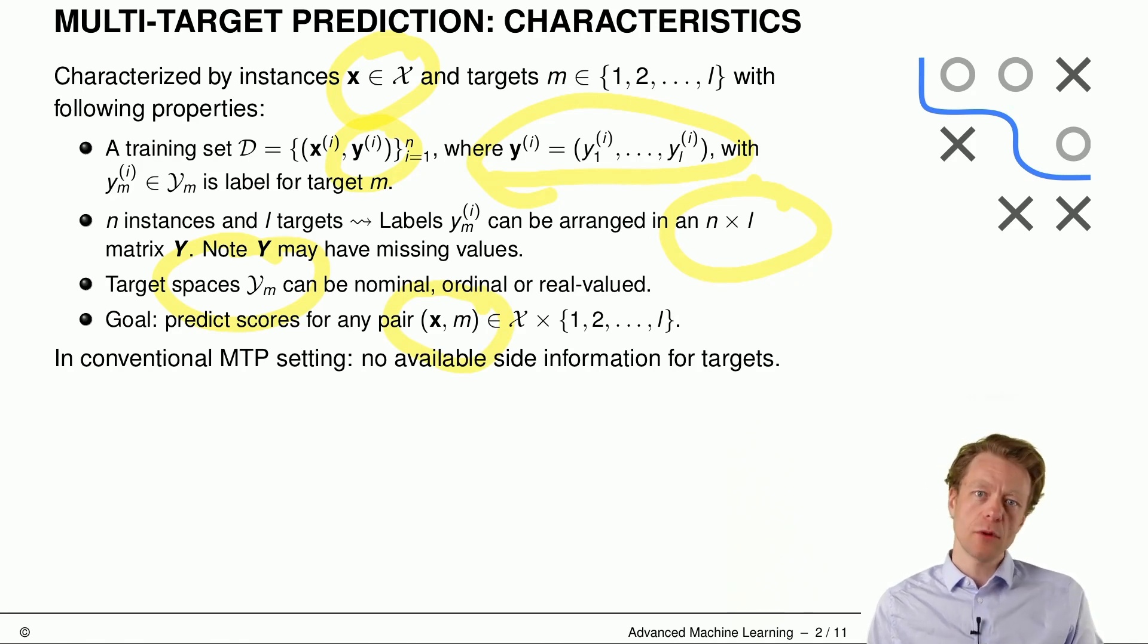So for each target m from 1 to l, we want to predict the score for a new feature vector. More side note here in conventional MTP settings, we have no available side information for the targets, but in later slides we will have the exact opposite situation, where we have side information on targets, and I will tell you how to use those.